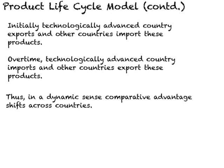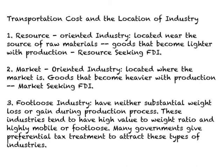The product life cycle model is able to explain the pattern of foreign trade over time in a dynamic sense. Initially, a technologically advanced country will export new items and other countries will import them. Over time, as the production process is transferred to other countries, the technologically advanced country will become an importer of the same product it was once exporting, while other countries will start exporting products they were previously importing. In a dynamic sense, comparative advantage shifts across countries from technologically advanced countries to others.